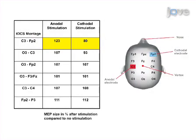Different electrode montages can vary the effects of TDCS. For example, whether cortical excitability is increased or decreased is dependent on stimulation polarity as well as other stimulation parameters.